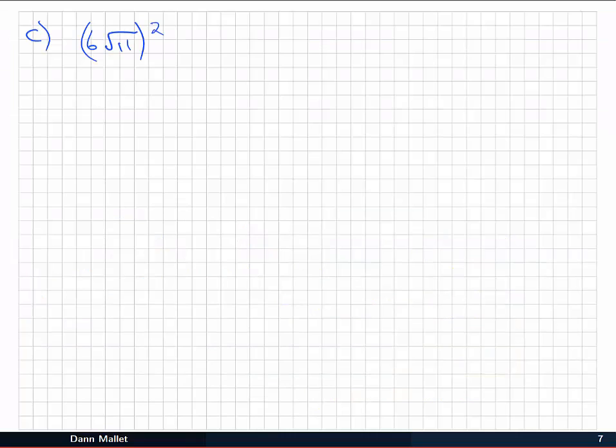In c, we have the square of (6√11). In this case, I might use my fractional indices to make this look a bit easier in how we might use the index laws. So inside the bracket we've got 6 times 11 to the 1/2. Remember that the square root is the 1/2 power. And then we've got that all raised to the power 2.